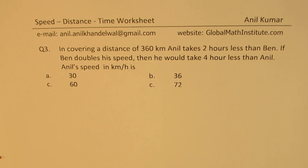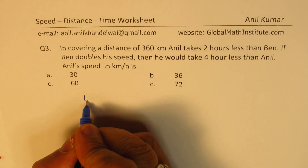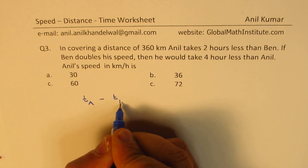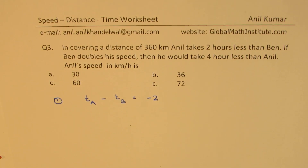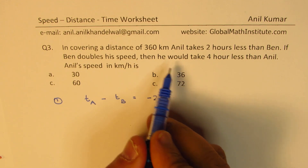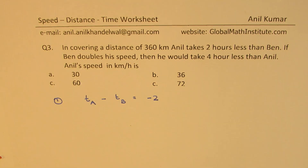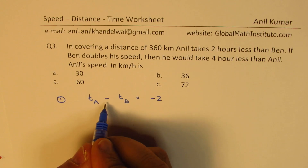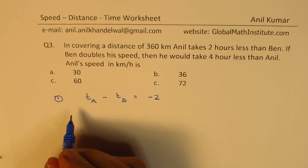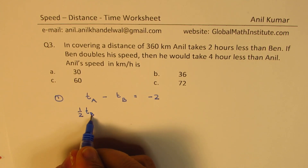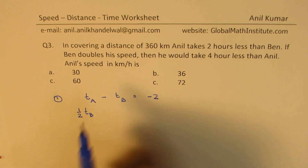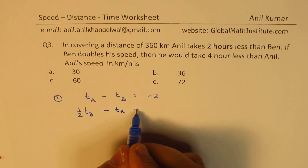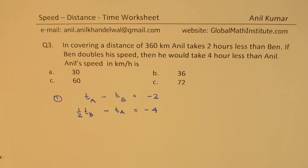In covering a distance of 360 kilometers, Anil takes 2 hours less than Ben. So the time difference T_A minus T_B equals minus 2 — that is our first equation. If Ben doubles his speed, his time will be half. So half of T_B minus T_A equals minus 4 — since he would take 4 hours less than Anil. That's our second equation.